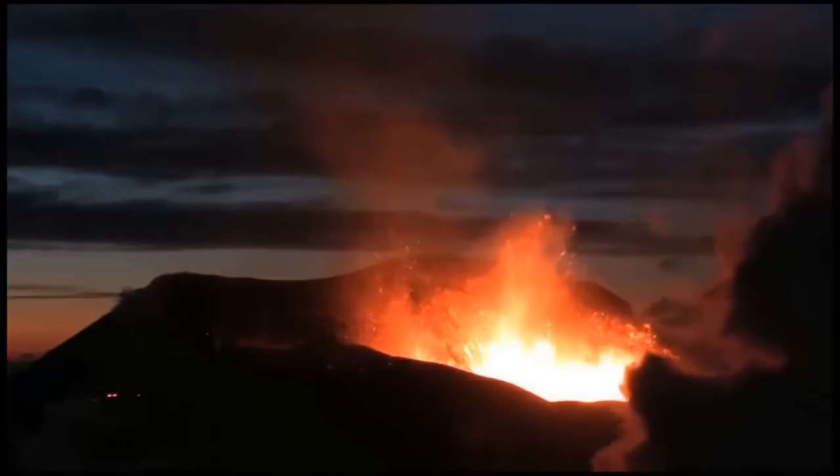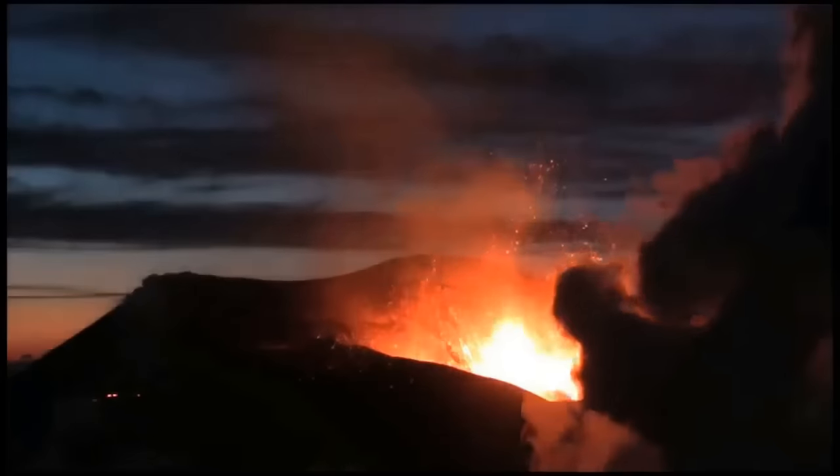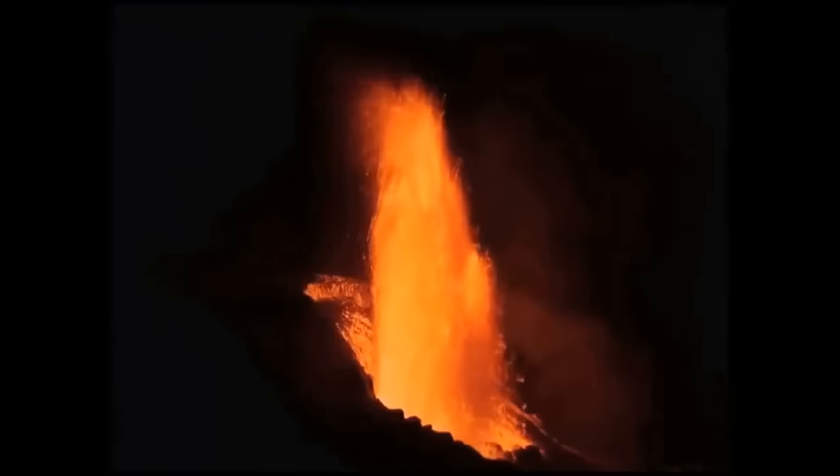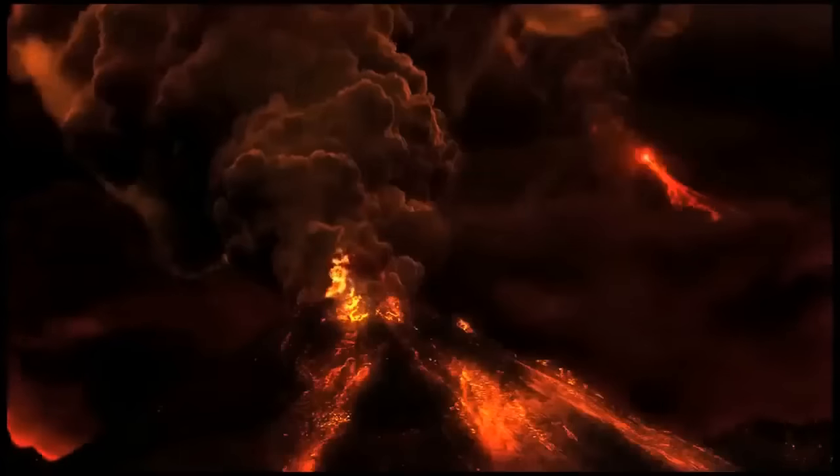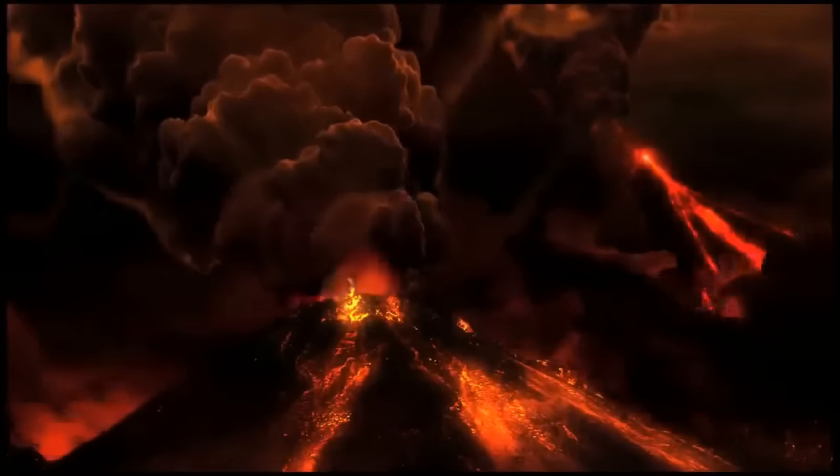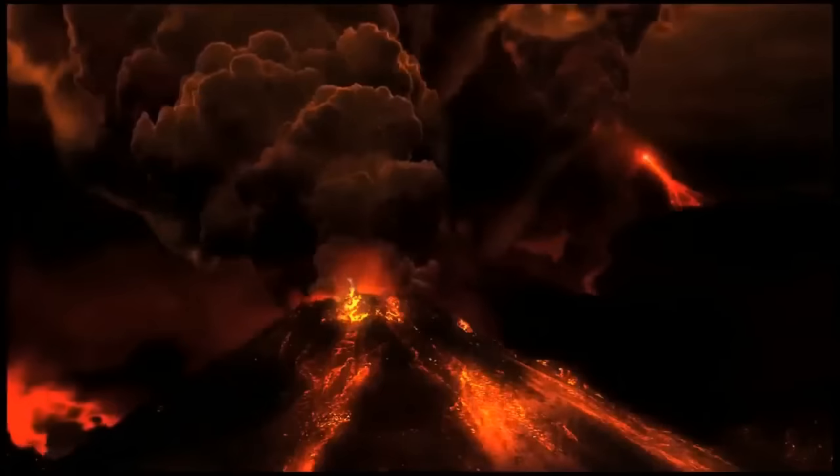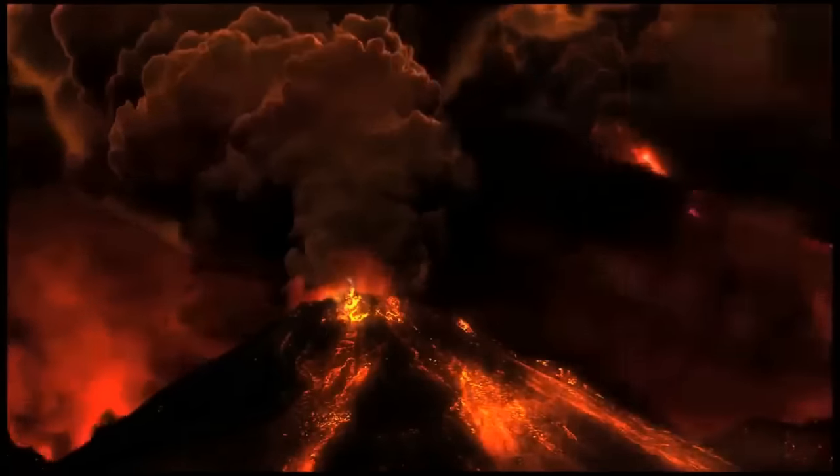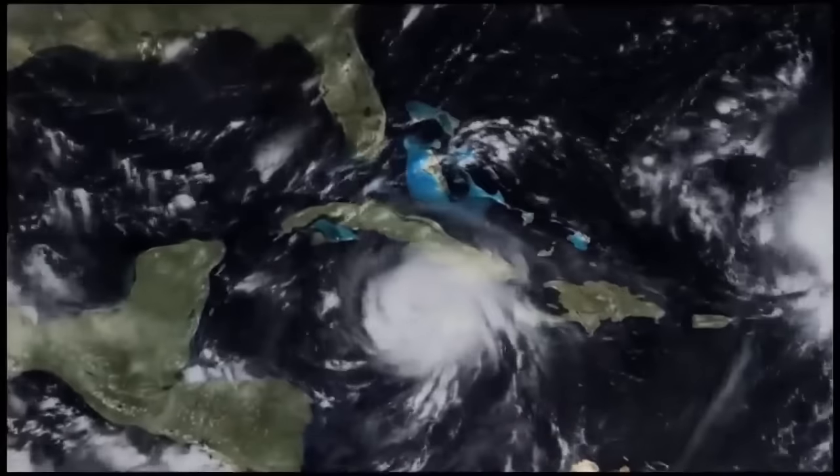Deep inside our planet, the radioactive decay of elements such as uranium and thorium generates 44 trillion watts of power. As this heat rises to the surface, it drives the movement of Earth's crustal plates and powers volcanoes. Remarkably, that's just a fraction of the energy released by a large hurricane in the form of rain. At the storm's peak, it can rise to 600 trillion watts.